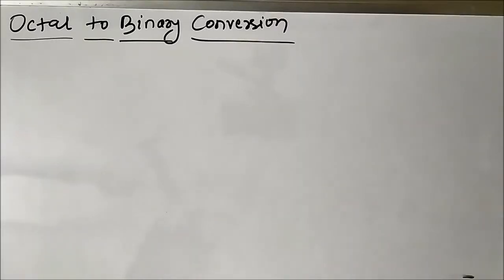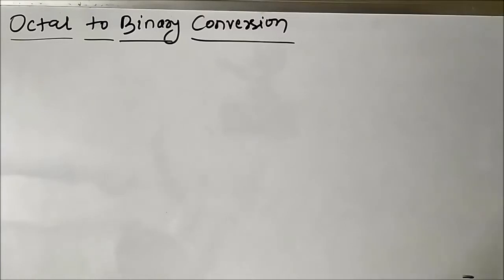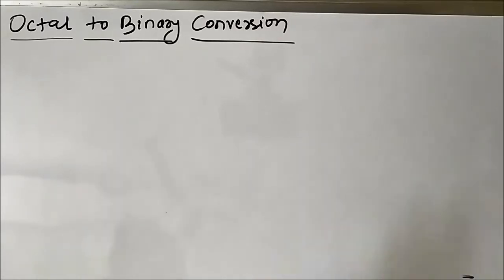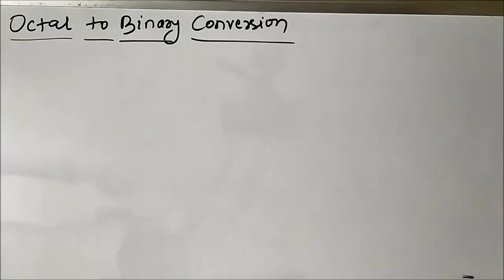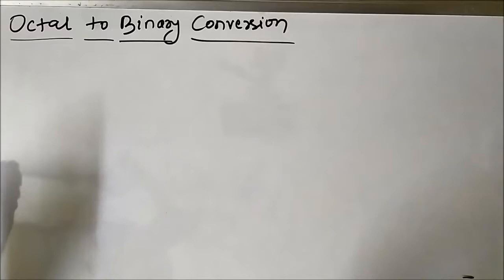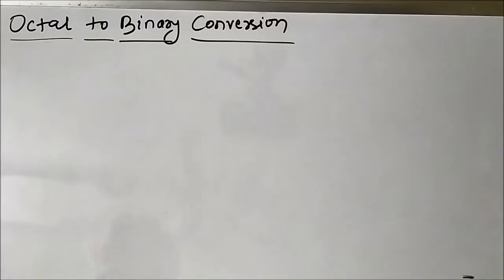Hello friends, welcome to Engineering Tutorial. In my previous few videos we discussed the interconversion from binary to decimal, decimal to binary, decimal to hexadecimal, hexadecimal to decimal, decimal to octal, and octal to decimal. We discussed these three interconversion techniques. In today's video we are going to study about octal to binary conversion — how to convert an octal number, or a number in base eight system, into its equivalent binary form, or base two form.